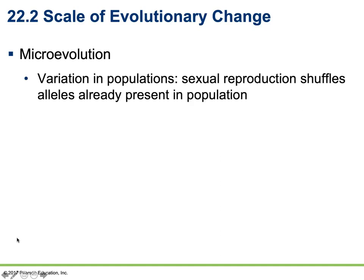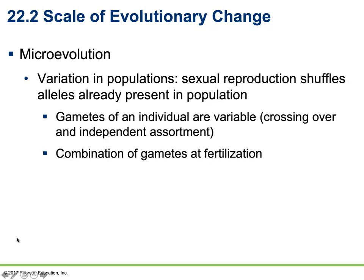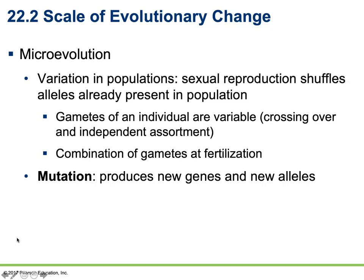Sexual reproduction can be used to influence genetic variation by reshuffling the alleles already present in a population through crossing over, independent assortment, and the combination of genetic information in gametes at fertilization. Another way to introduce new alleles is through mutations. A mutation is a permanent change in the nucleotide sequence of DNA and occurs at a very low rate. In a small isolated population, such as life on a secluded island, genetic variation by mutation can have a much larger impact.